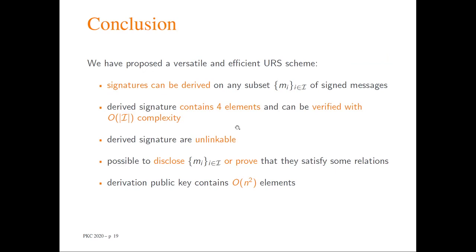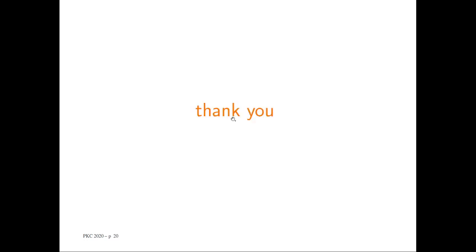So to conclude, in this paper we have proposed a new efficient unlinkable redactable signature scheme. From this signature scheme, it is possible to derive a signature on any subset of signed messages. The derived signature contains only four elements and can be verified with complexity that depends linearly on the number of non-redacted messages. The derived signatures are unlinkable, and it is also possible to disclose the messages or prove that they satisfy some relations, which is an important improvement over previous solutions. The downside is that the derivation key must contain a quadratic number of elements, but we hope this could be improved by further work. Thank you for your attention, and do not hesitate to contact me if you have any questions.